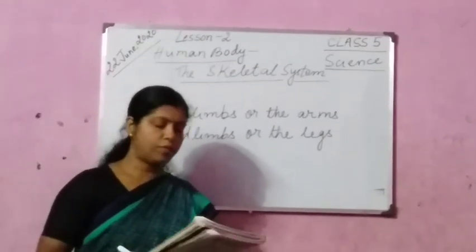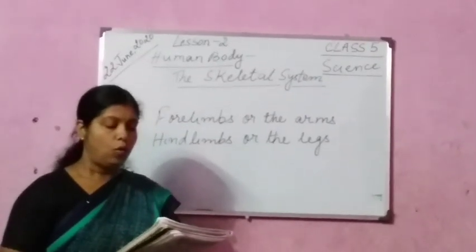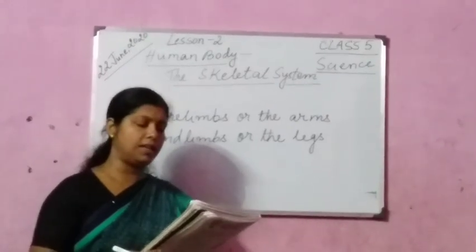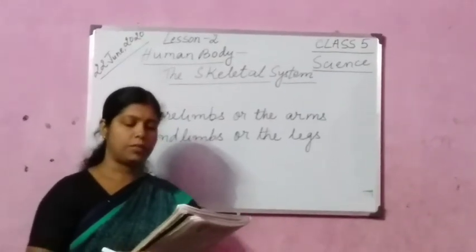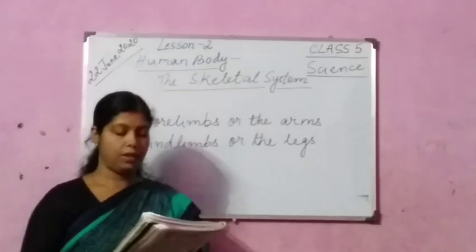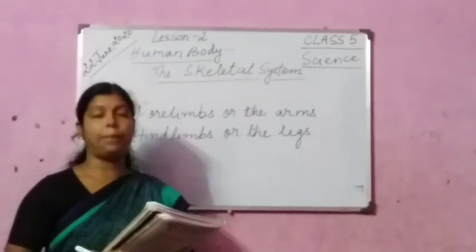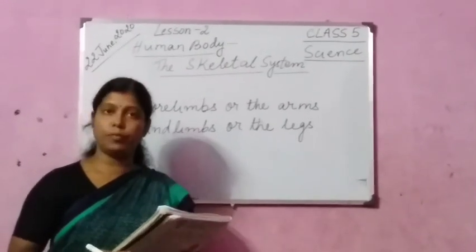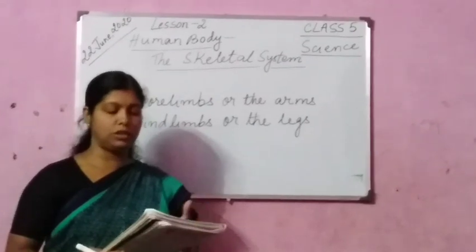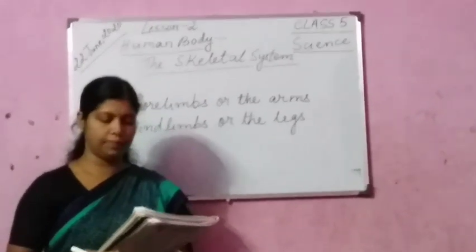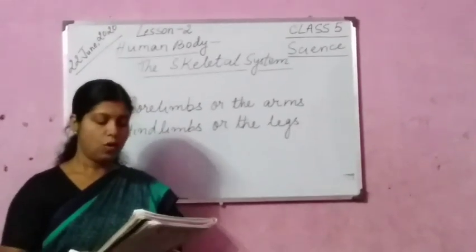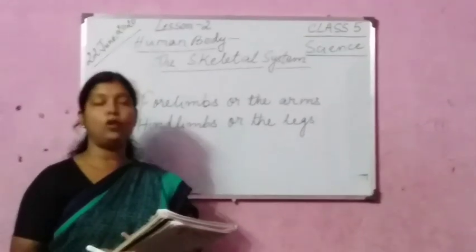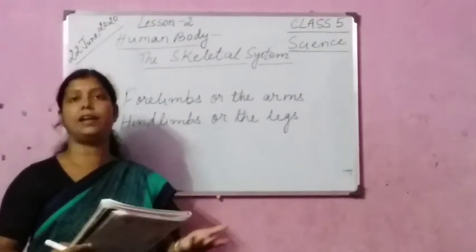Now some quick questions: What is the name of the single bone that the upper arm has? The upper arm has a single bone called humerus. What are the names of the two long parallel bones of the lower arm? They are ulna and radius.